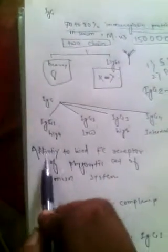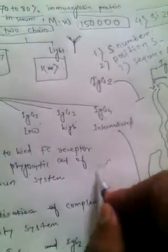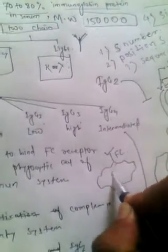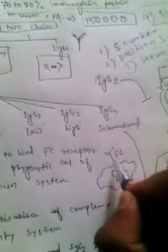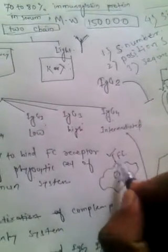The affinity to bind F-C receptor varies. The F-C receptor is on cells. For instance, on an APC cell, where the antibody binds with the help of the F-C receptor and interacts with antigen. There, the process of phagocytosis takes place.